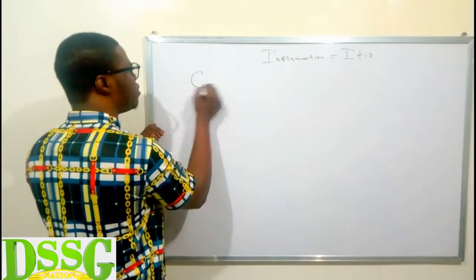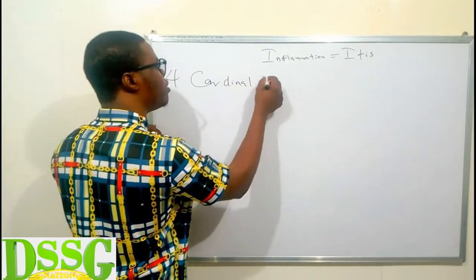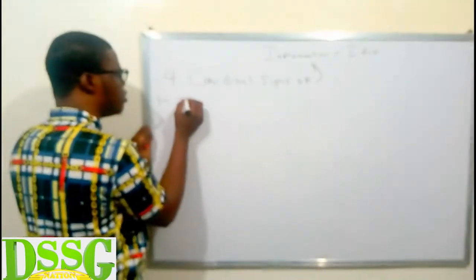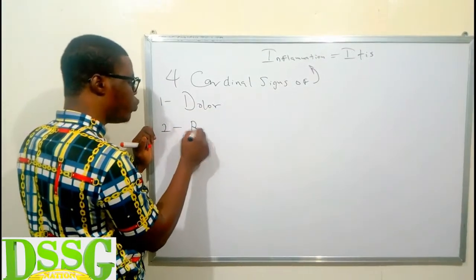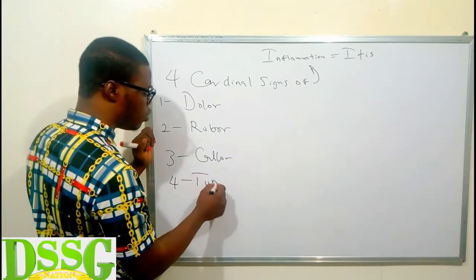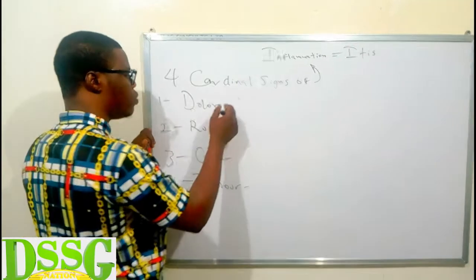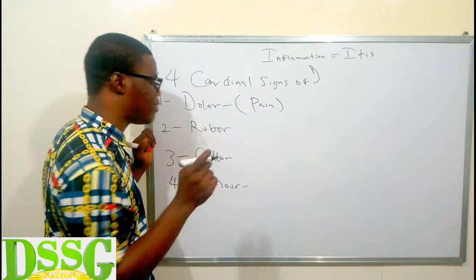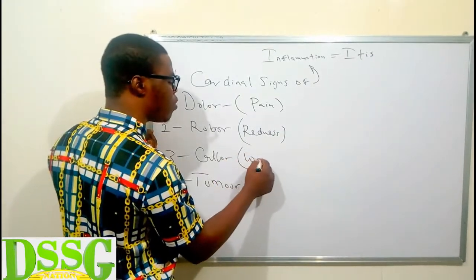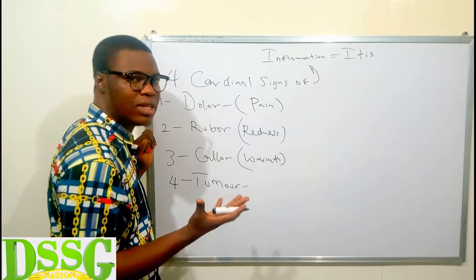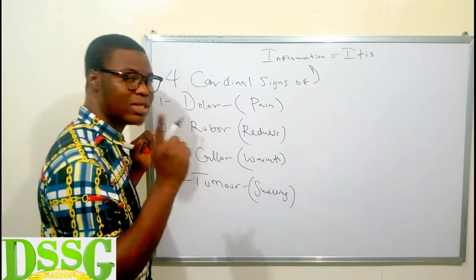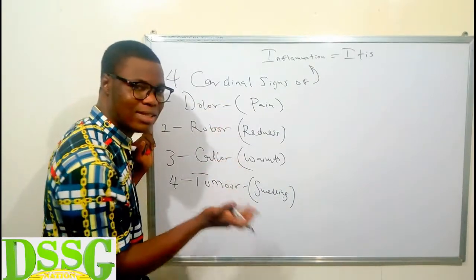Now the cardinal signs of inflammation — we have four cardinal signs. The first one is 'dolor,' the second is 'rubor,' the third is 'calor,' and the last is 'tumor.' They are all Latin. Dolor means pain, rubor means redness, calor means warmth — the temperature of that site will be slightly elevated — and tumor means swelling.